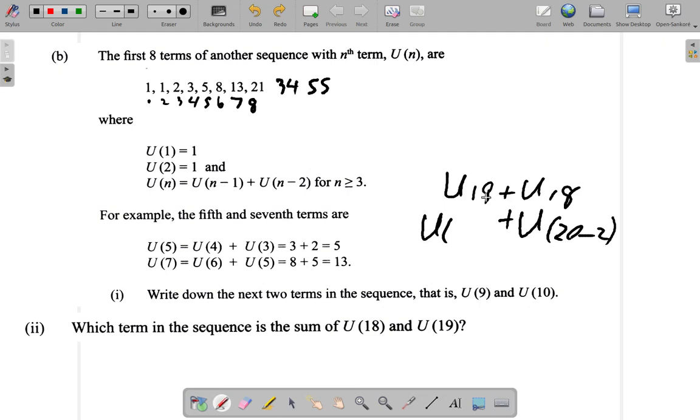U something minus 1 would be U(20) minus 1 because 20 minus 1 is 19. U(n) is that, so this is U(20).